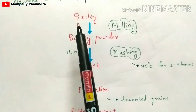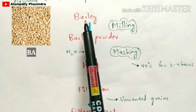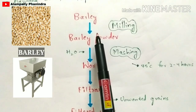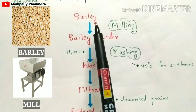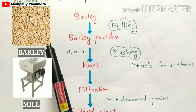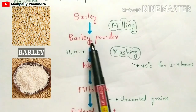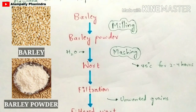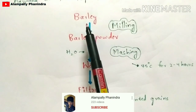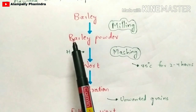The first step is to take barley and convert it into barley powder. As you can see in the diagram, this equipment is called a mill. You add the barley into the mill and switch it on, such that the barley gets converted into barley powder, which comes out from the outlet. This process of converting barley into barley powder using a mill is called milling.